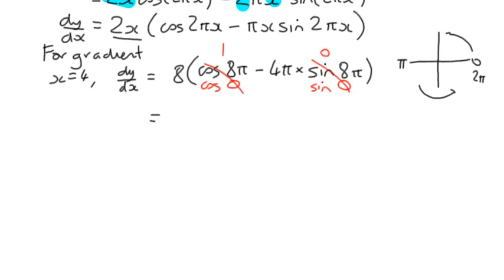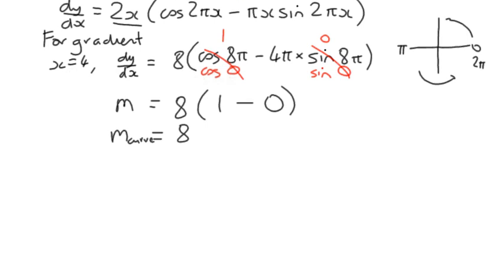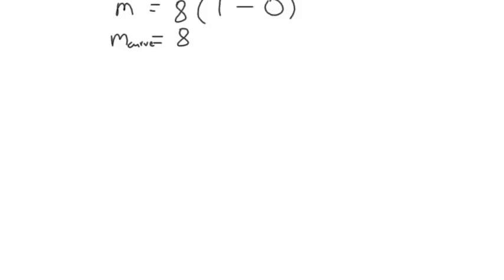Which means that the gradient at a particular point, and it's not just dy/dx, I'm going to actually use m, is going to be 8 times. Let's try and tidy that up. We've got 1 minus. All of that goes to 0. So the gradient is 8. The gradient of the curve is 8. If the gradient of the curve is 8, then at the point of tangency, the gradient of the tangent is 8.